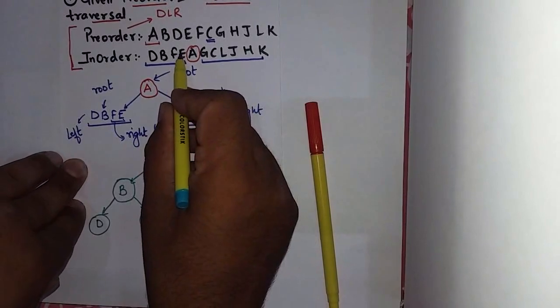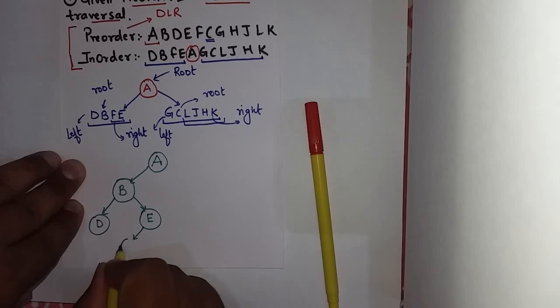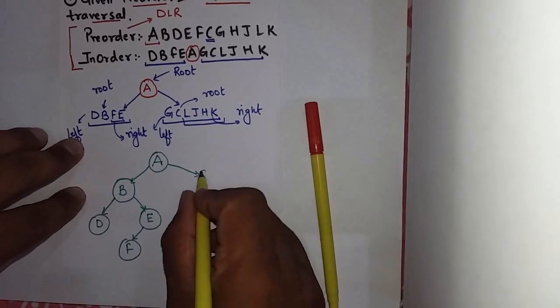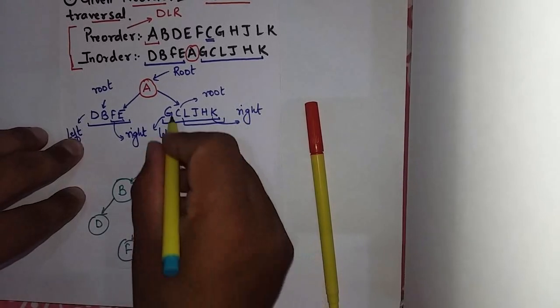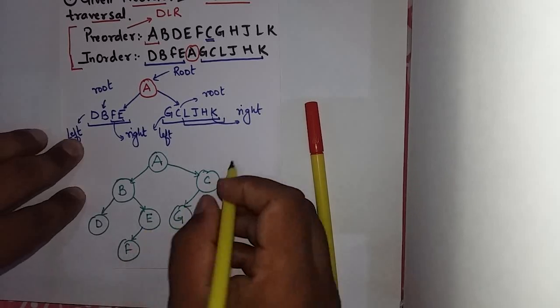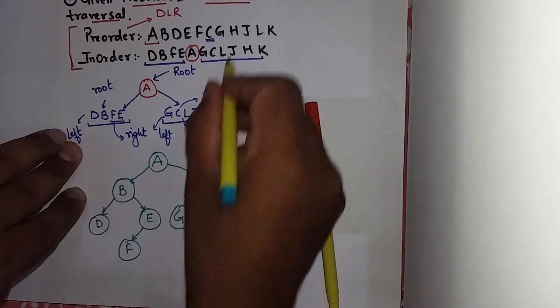And F is at which location from E? Left. So F. Now here C is root. C's left has G. Now let's see here, which one will become root? H. So H.